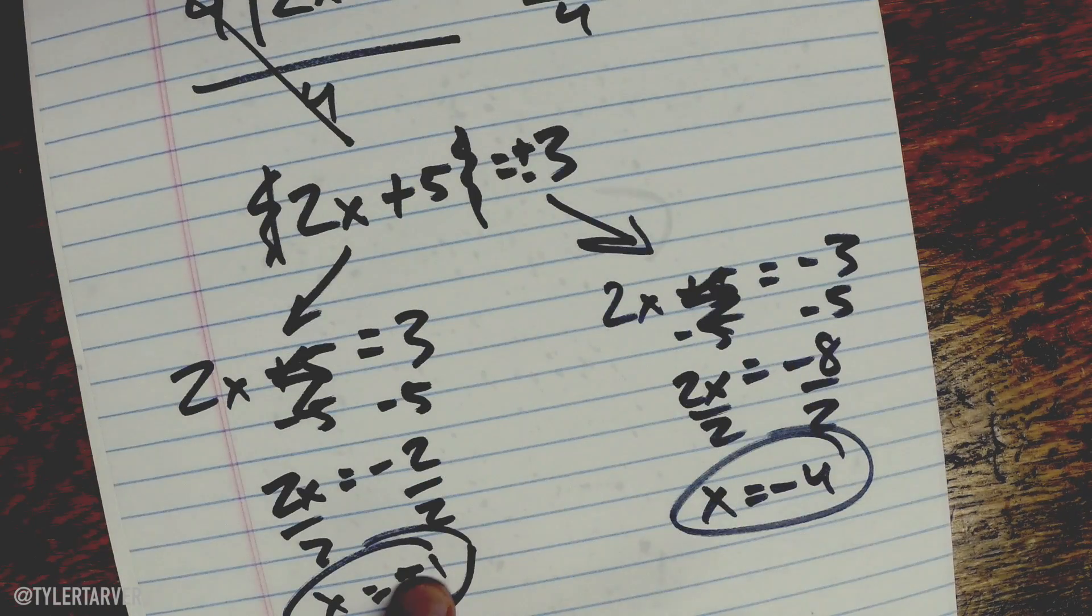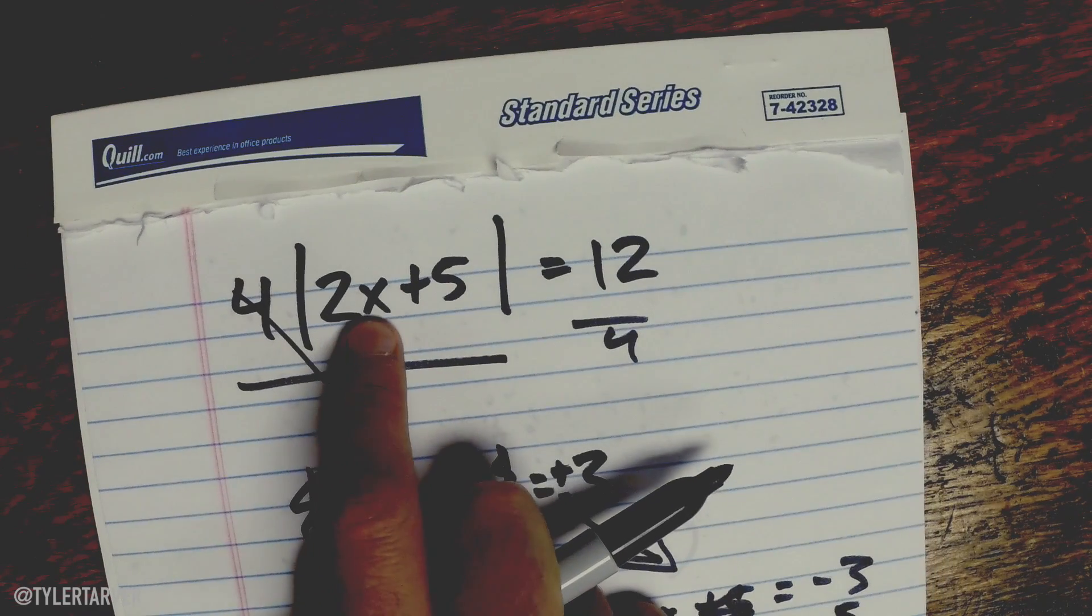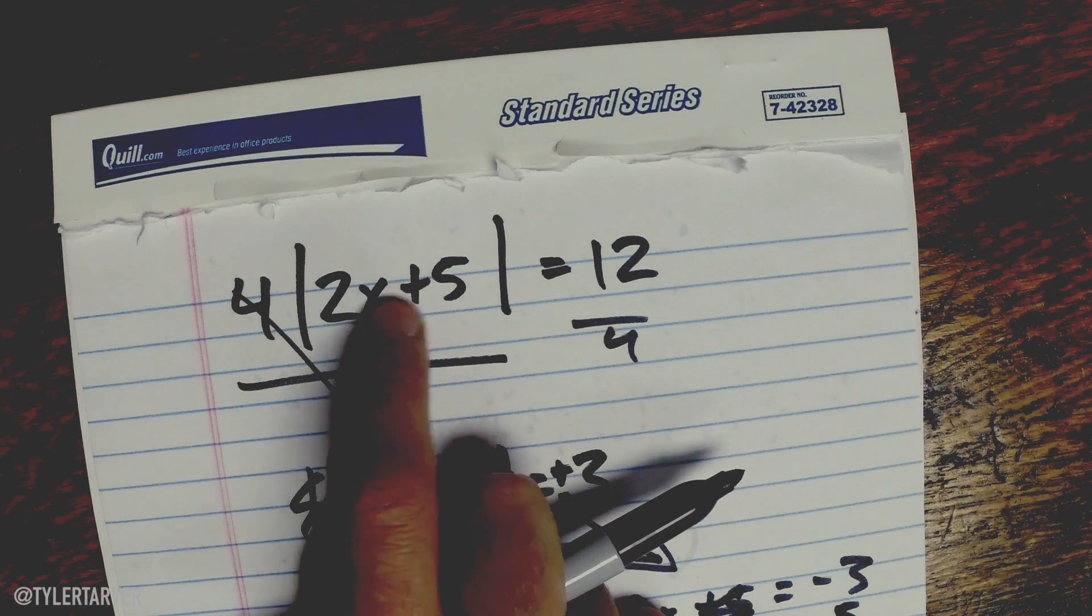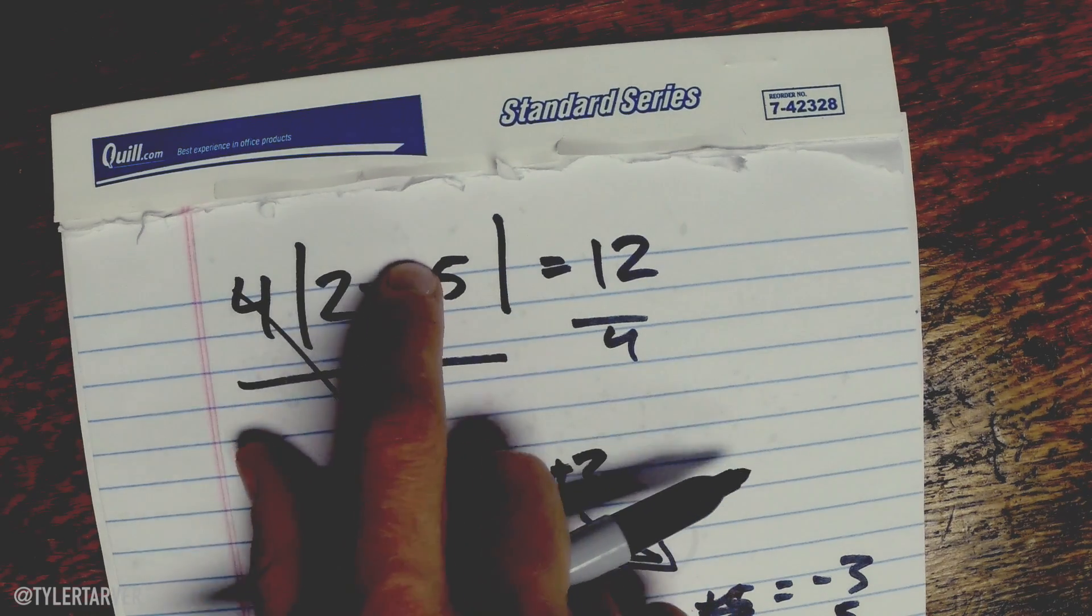Now we can plug it in up here in our original and figure out and see if it works. Let's plug negative 1 in. So 2 times negative 1 is negative 2, plus 5 is 3, and then we'd multiply - there's no negative to get rid of, so it stays 3. 3 times 4 is 12, 12 equals 12, so the first one works, cha-ching.